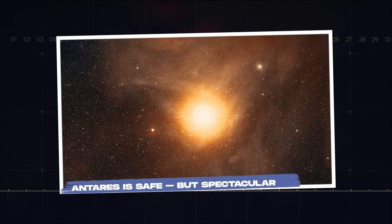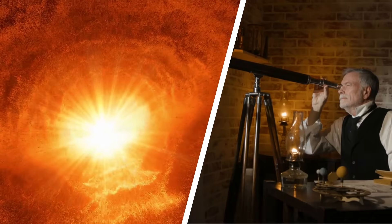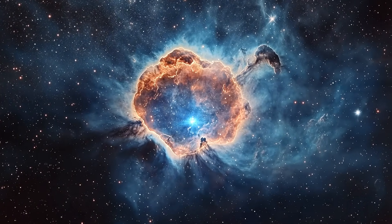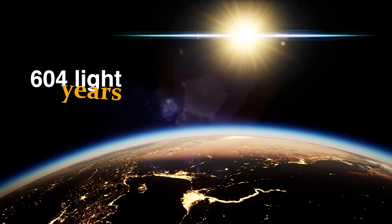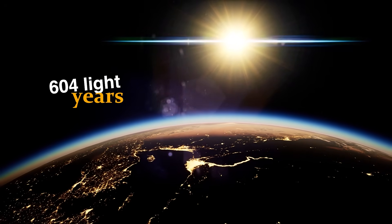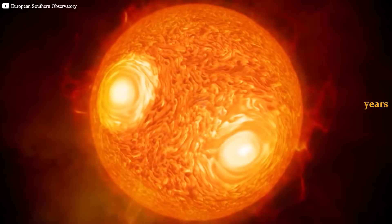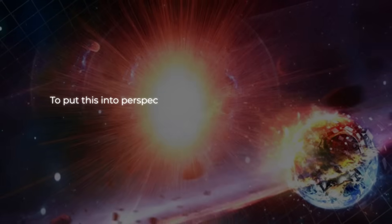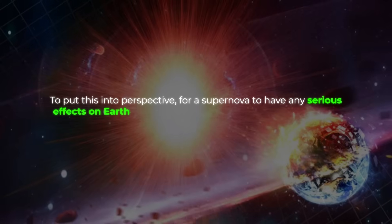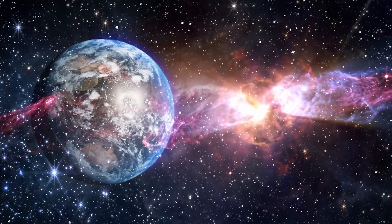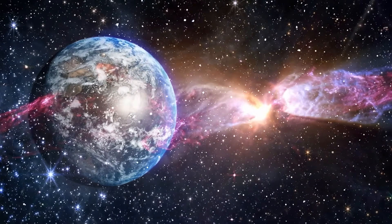Antares is safe, but spectacular. While the impending supernova of Antares is certainly an exciting event for astronomers, there's no need to worry about any potential dangers. Antares is located approximately 604 light-years away from Earth, which places it well outside the 50 light-year danger zone for supernovae. To put this into perspective, for a supernova to have any serious effects on Earth, it would need to occur much closer, within about 50 light-years. At this distance, the radiation and shock waves from the explosion would have little to no impact on our planet.